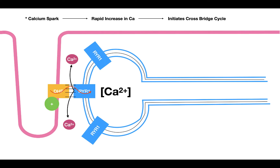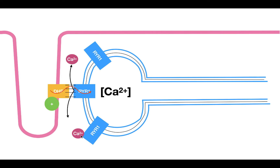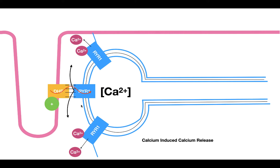That's only half of the story. The second half involves the ryanodine receptors that are not coupled to DHP receptors. These receptors bind to the calcium released from the mechanical coupling process and open, allowing more calcium to flow into the cell. This process of calcium inducing calcium release is called calcium-induced calcium release, or CICR. This is how calcium is increased inside the cell, ultimately causing contraction.